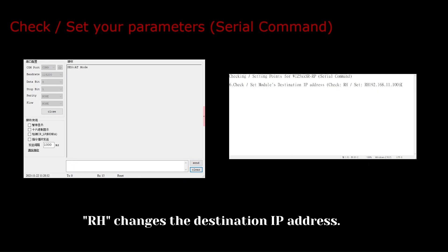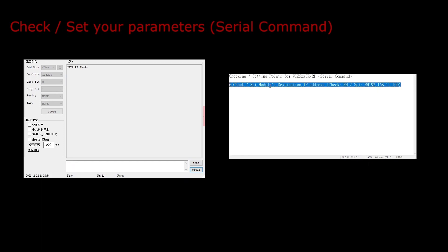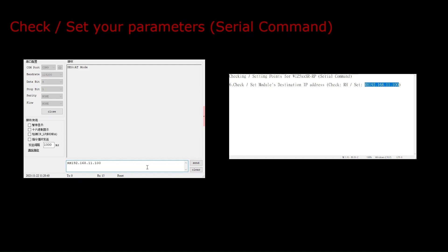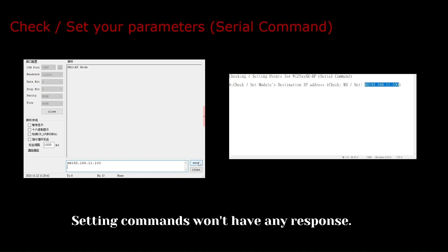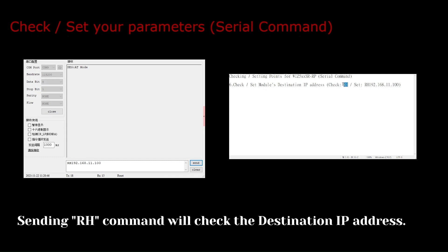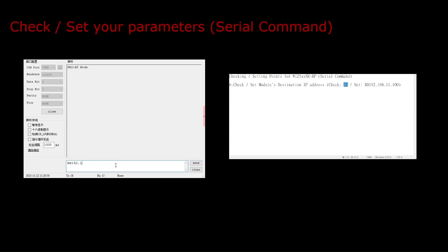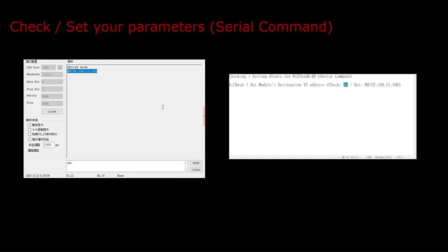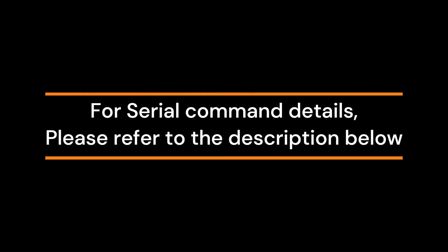RH changes the destination IP address. Set the IP address as RH plus the new destination IP address. Setting commands won't have any response. Sending the rh command will check the destination IP address. Destination IP address has been updated. For serial command details, please refer to the description below.